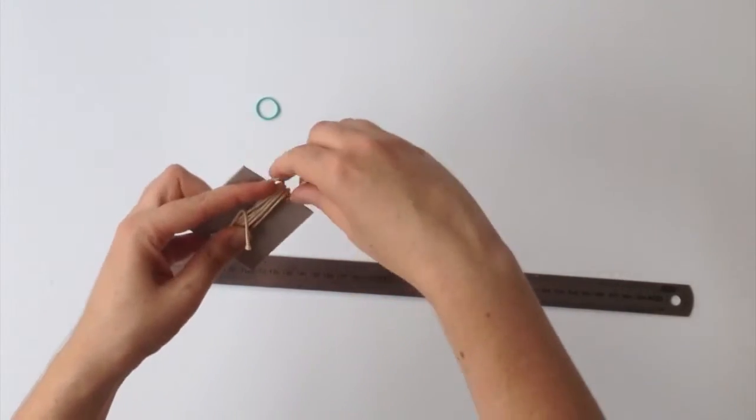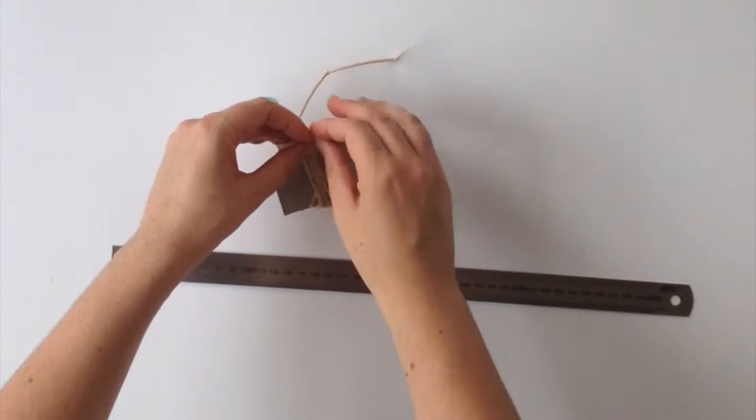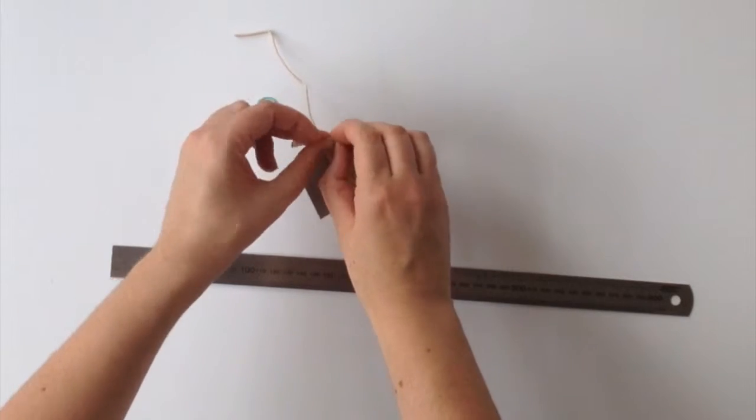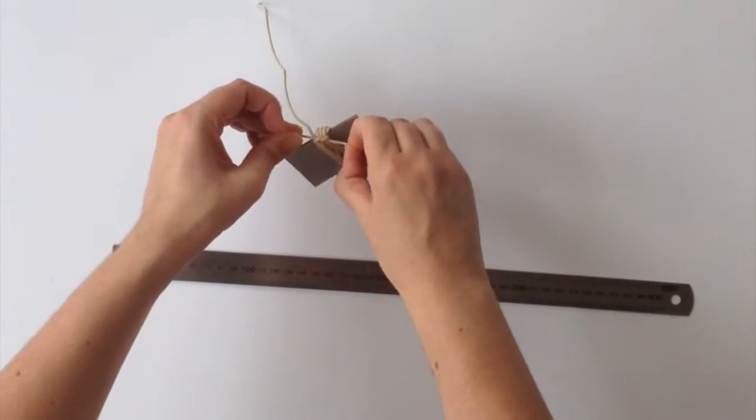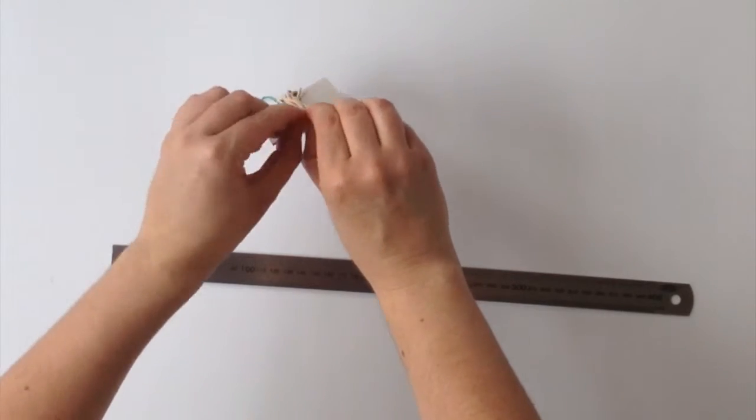Pull it up to the top and tie that off. Do it with a double knot so that it's really secure.